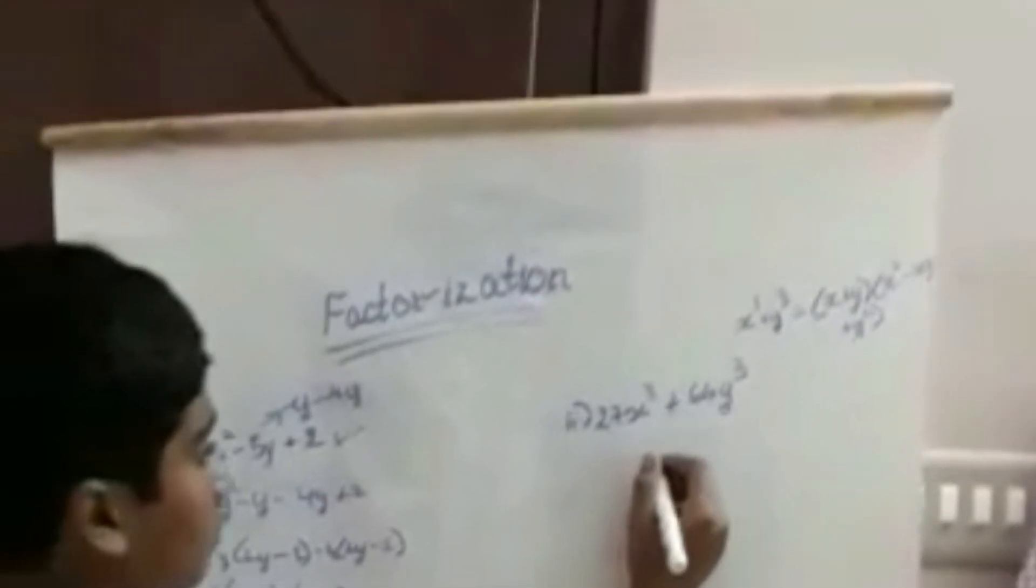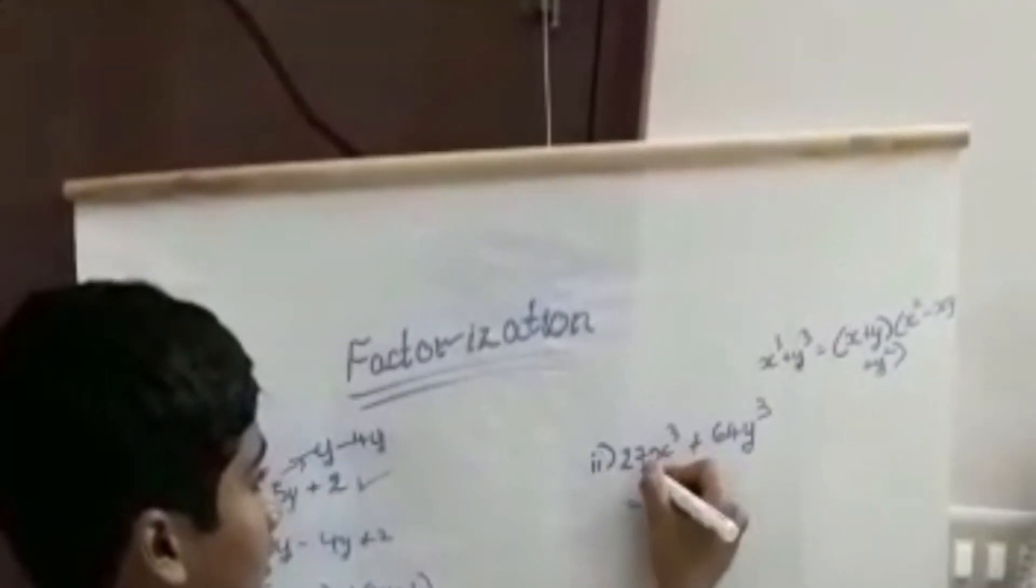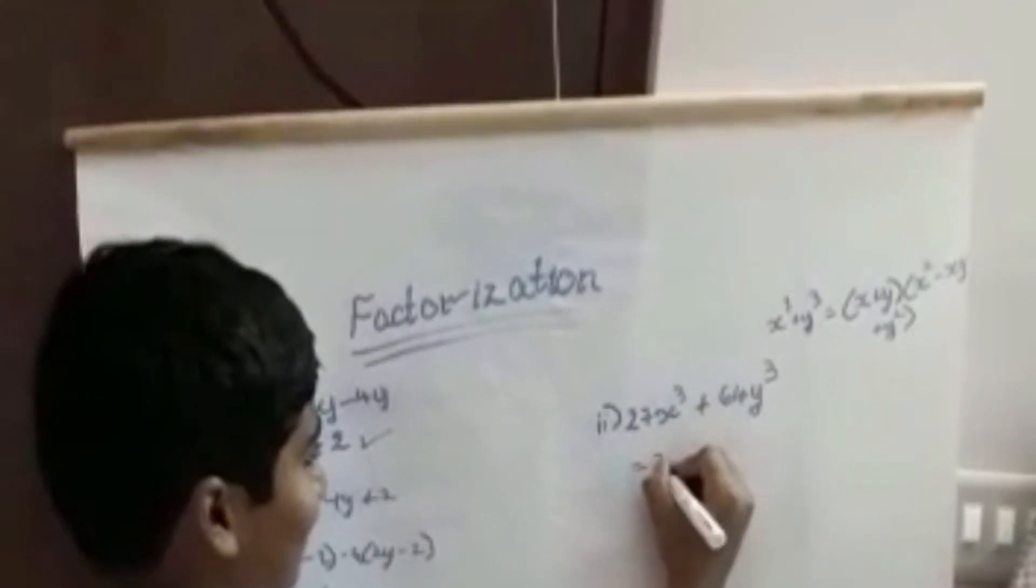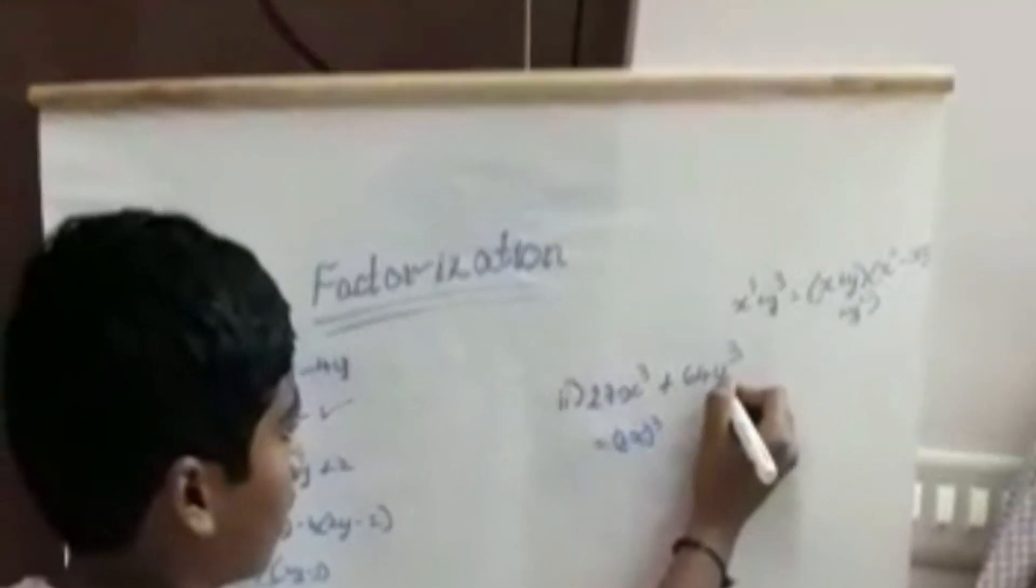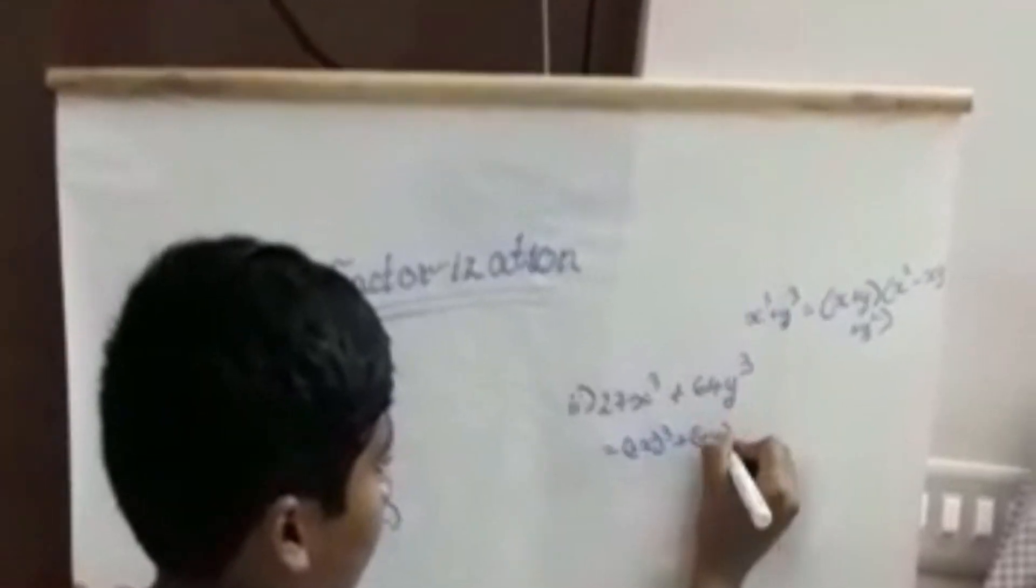Let's move towards the second example. Here I write 27x³ as (3x)³, and 8y³ as (4y)³.